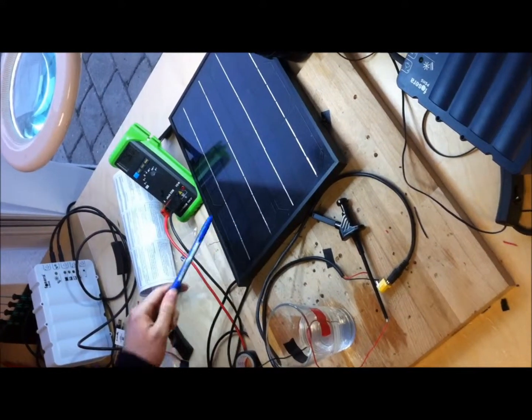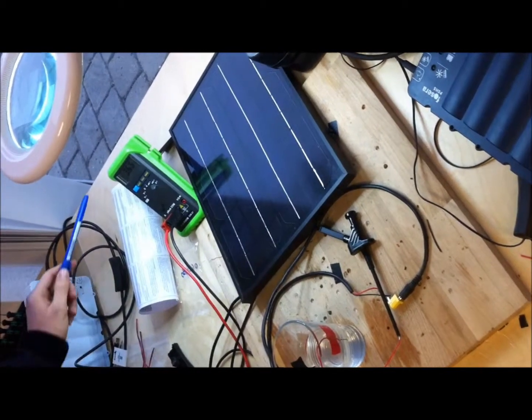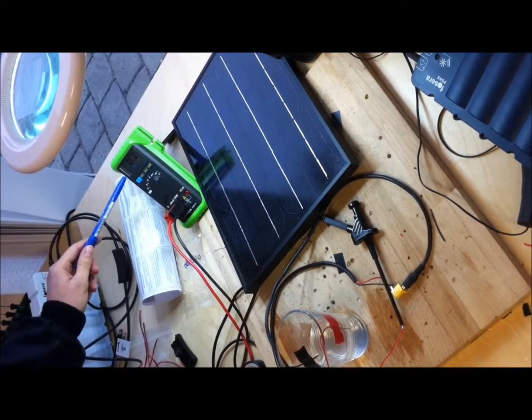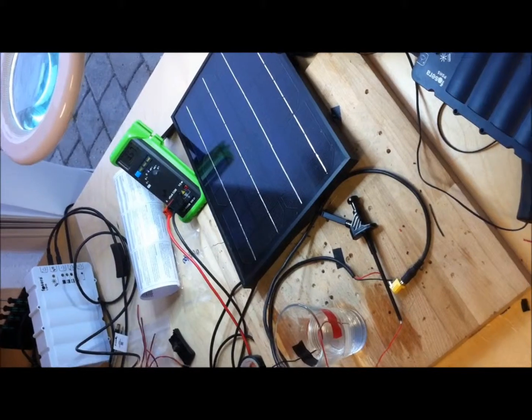What you see here is the solar panel in order to produce the voltage. Here is a multimeter in which I will be reading the current. And here is the water.